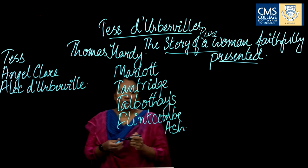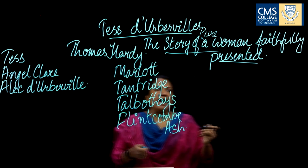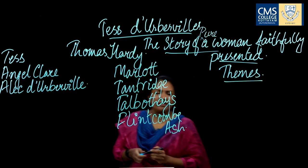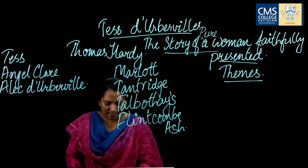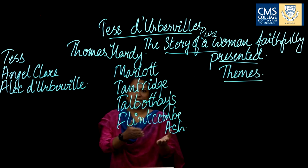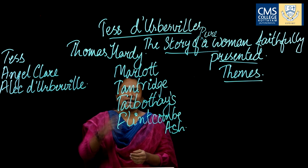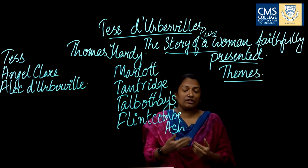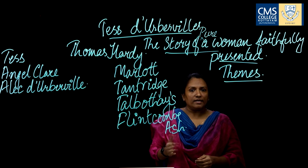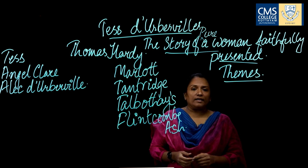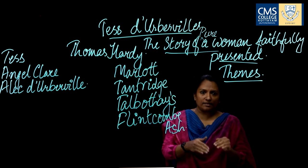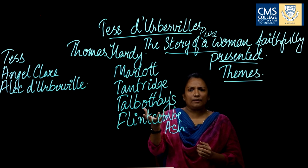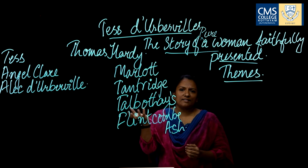Those are the main locales in the novel. Now the main character Tess is an 18-year-old girl, the daughter of Joan and John Durbeyfield. In the beginning of the novel you see a poor family that is fighting for their daily bread and butter.